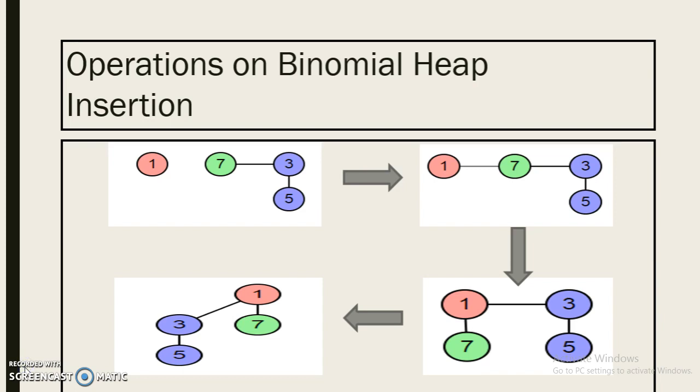In this example, let's say we want to insert a node with value 1 to this given binomial heap. So let's just connect this node, but in a single binomial heap we can't have two trees with the same order.